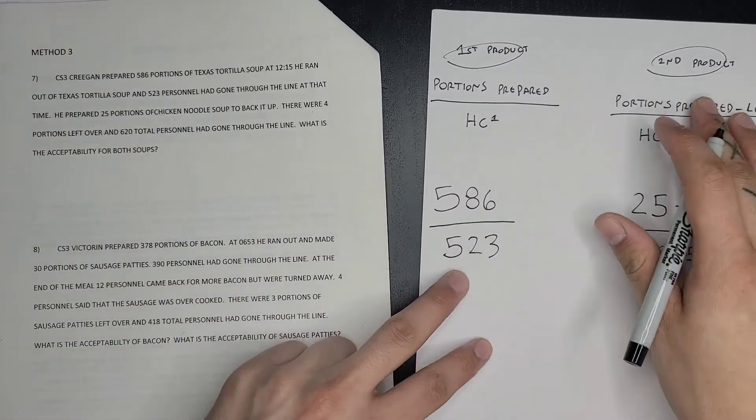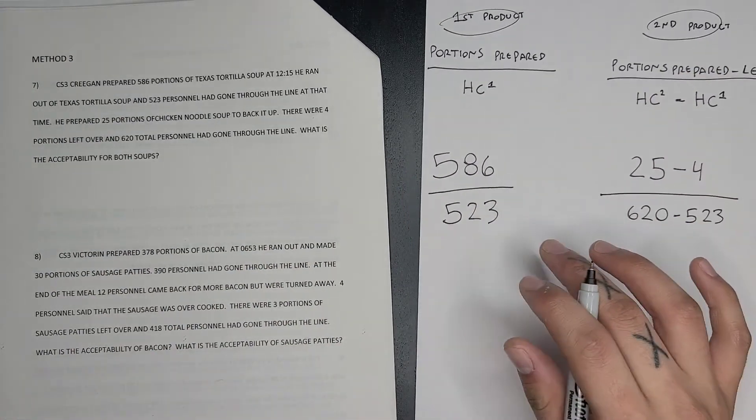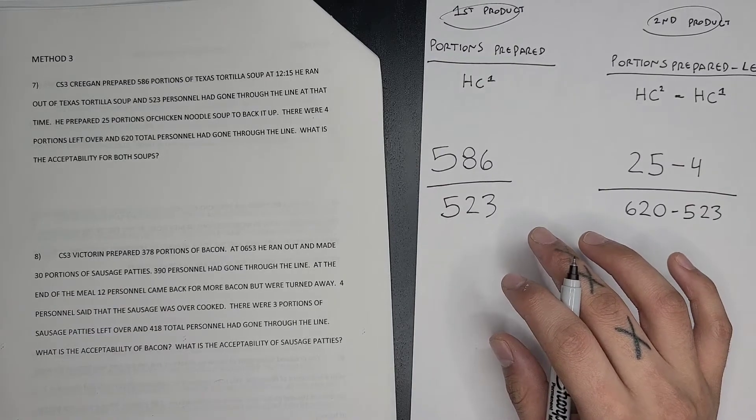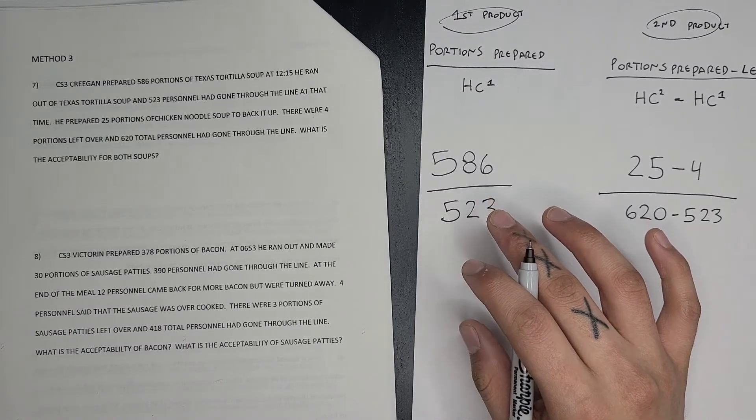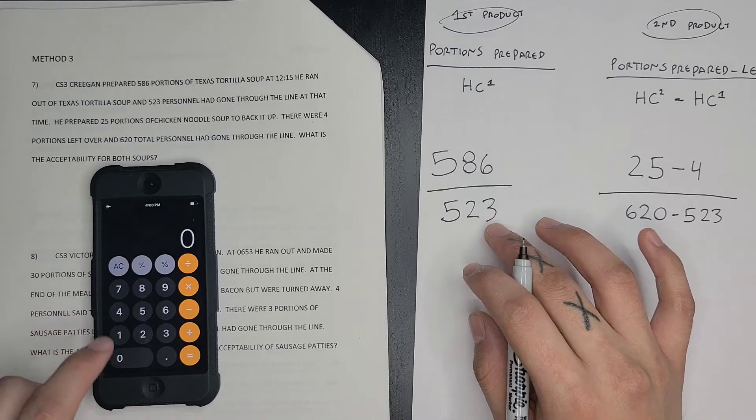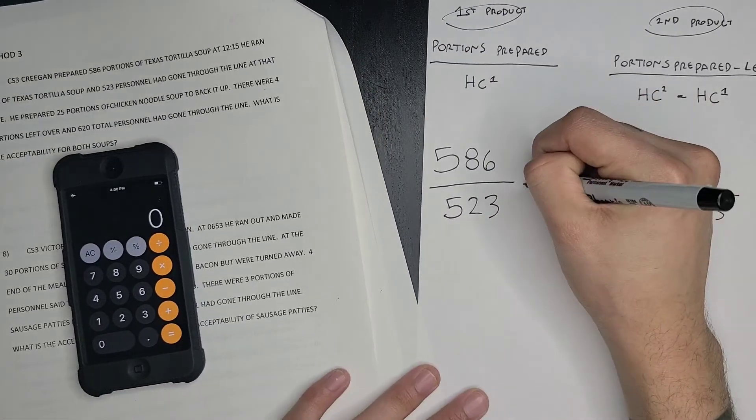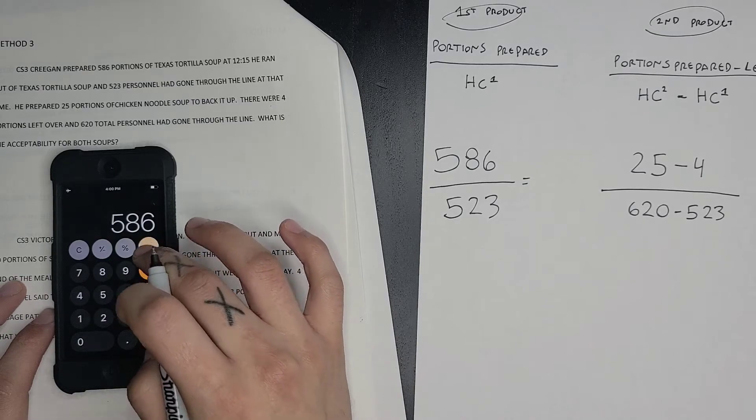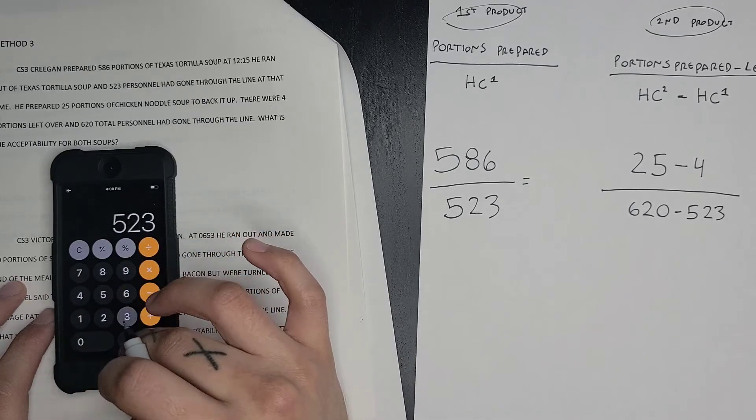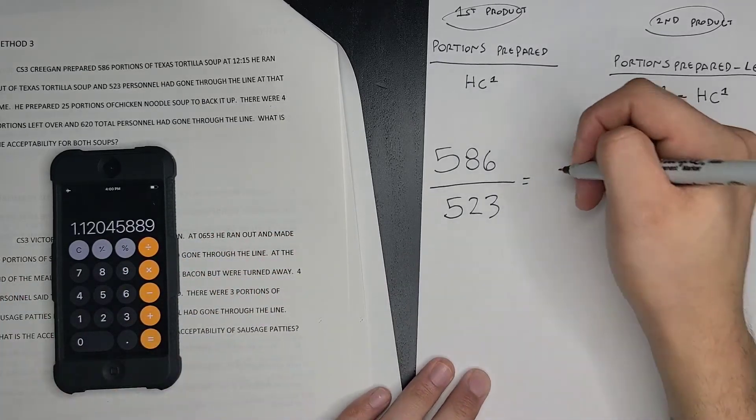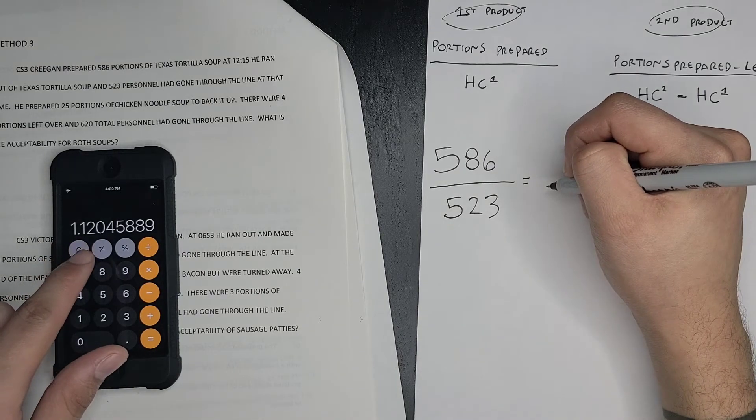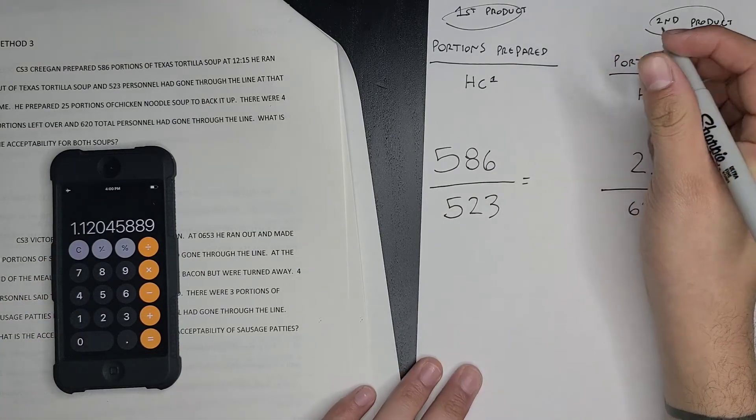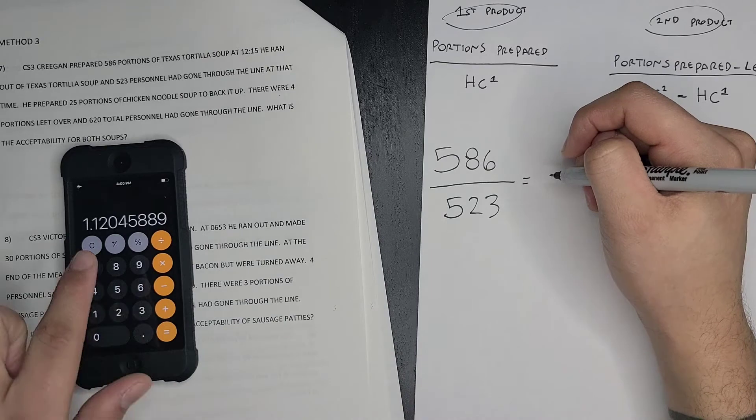The first one I've got to do is 586 divided by 523. So 586 divided by 523, which is 1.1204. Again, we only need it to the hundredths place, 1.12.